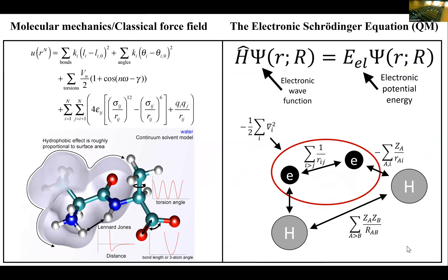When we think about the dilemma in computational chemistry, you have a few choices. If you're interested in simulating a large system, you're typically stuck in the realm of molecular mechanics force fields — they're nice and fast, little analytical formulas. But if you want to do rigorous quantum mechanics, you have to solve the Schrödinger equation.